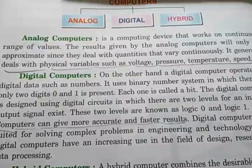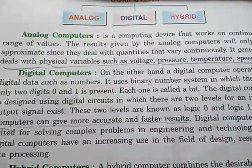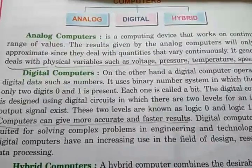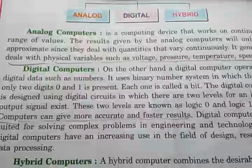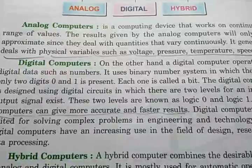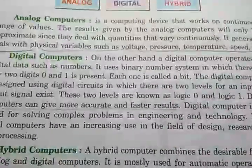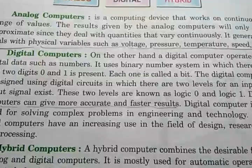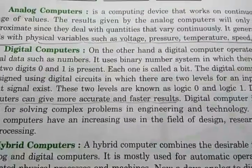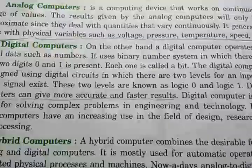To summarize, on the basis of signals, computers are of three types: analog, digital, and hybrid. Analog computers are used to calculate physical quantities and give results in continuous form. They are mostly used to compute voltage, pressure, temperature, and speed, and are commonly used in hospitals to measure the heartbeat of a person.